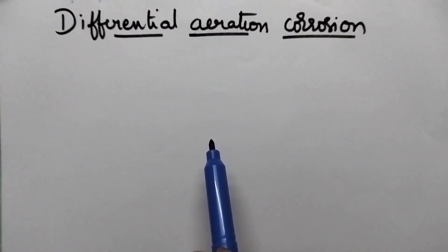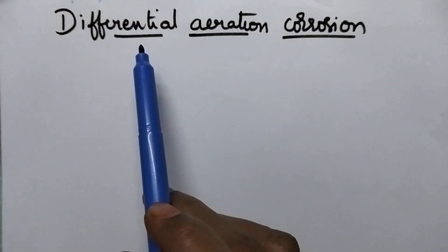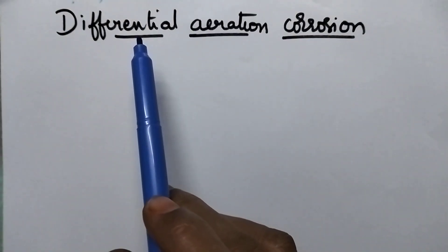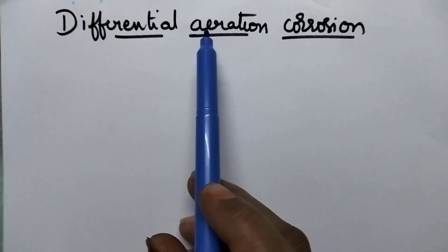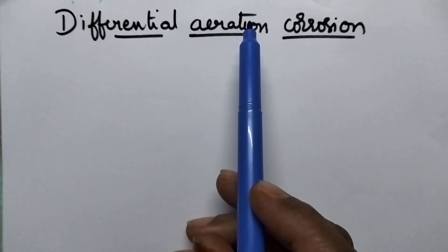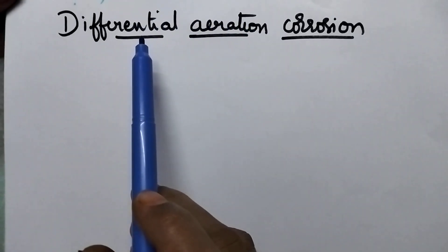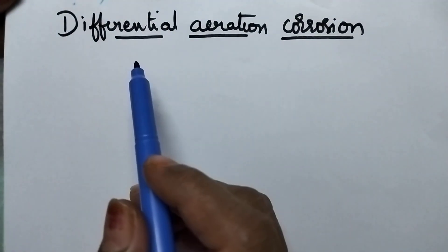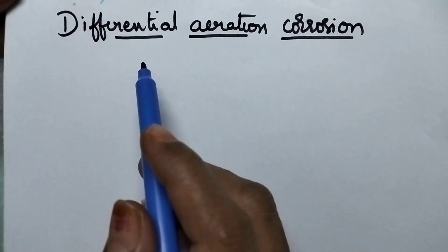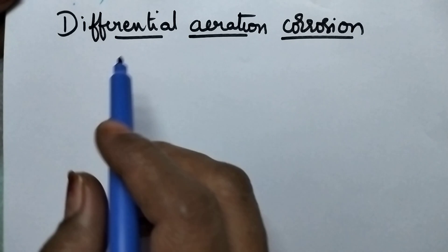Hello students, welcome back to my channel. In this video, I am going to discuss in detail about differential aeration corrosion. This type of corrosion arises due to the difference in the concentration of air or oxygen.